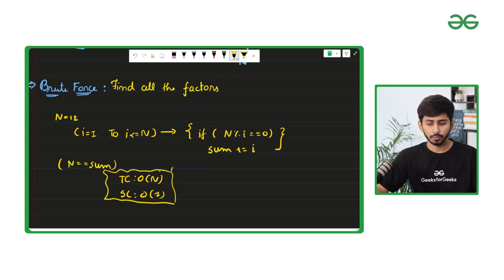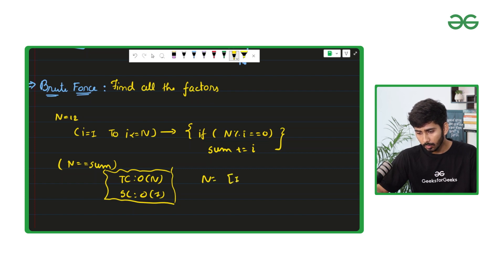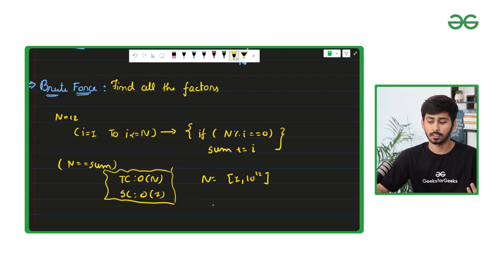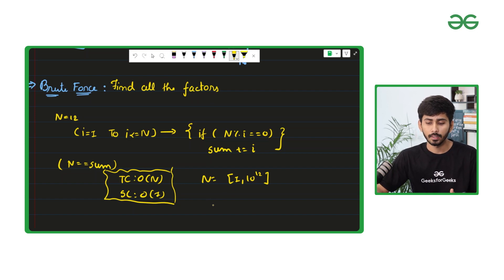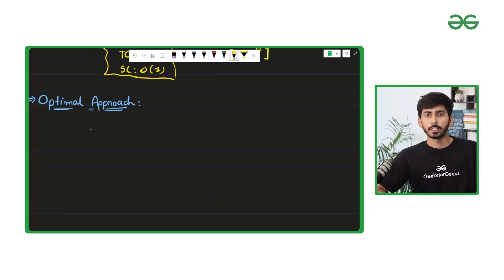Will this approach work? For that, we need to know the range of n. In the question, it is given that the range of n is from 1 to 10 to the power 12. In the worst case scenario where n equals 10^12, this approach is not going to work. So we need to optimize this approach.